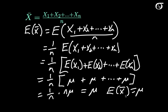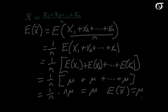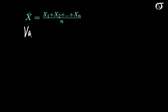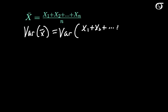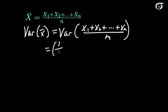On average, the sample mean equals the population mean. Now what about the variance? The variance of x-bar is equal to the variance of (x1 + x2 + ... + xn) over n. When we multiply by a constant, the variance gets multiplied by that constant squared. So we can draw this n term out, but we have to square it — giving us 1 over n squared times the variance of the sum.